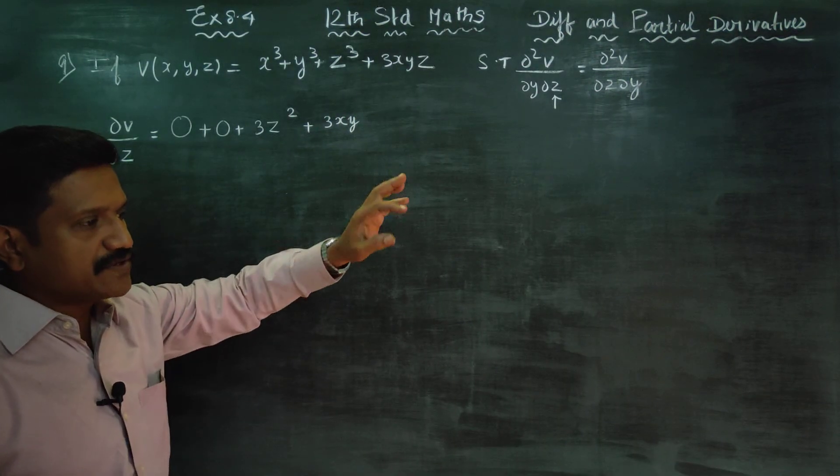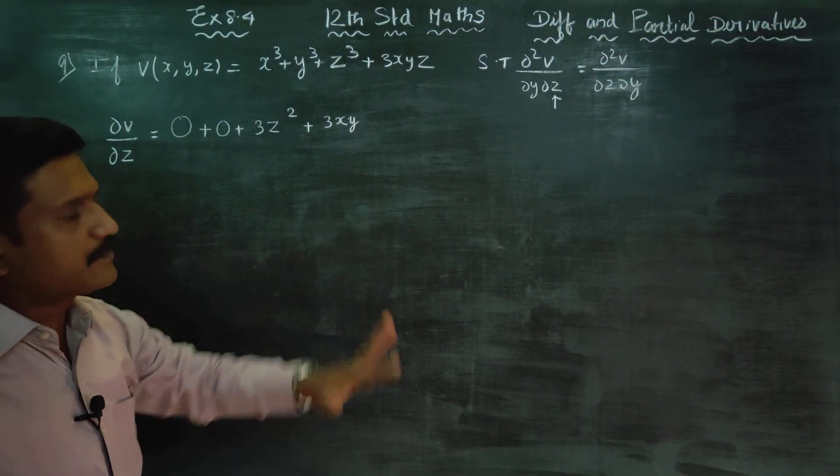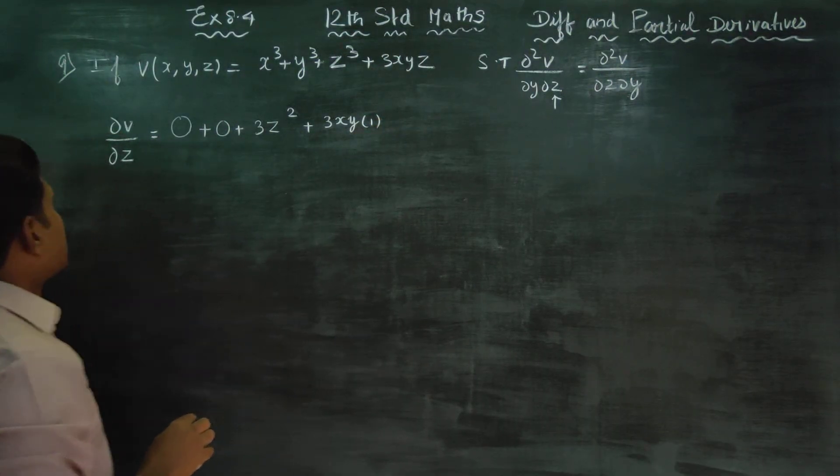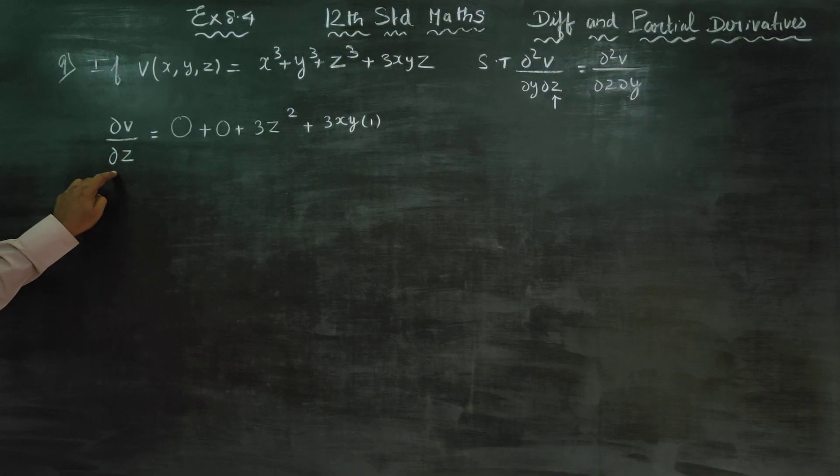In multiplication or division, constant won't disturb. Z differentiate, my answer is 1. This is my dv/dz.